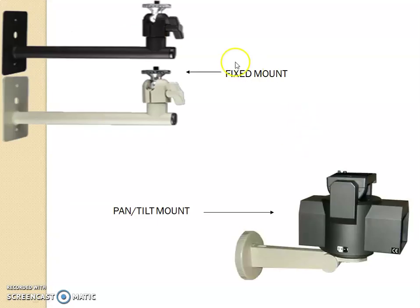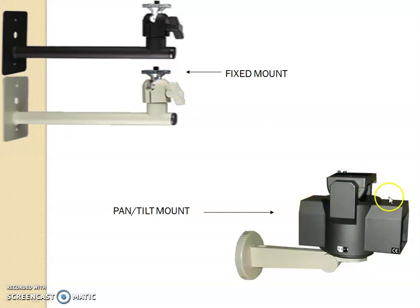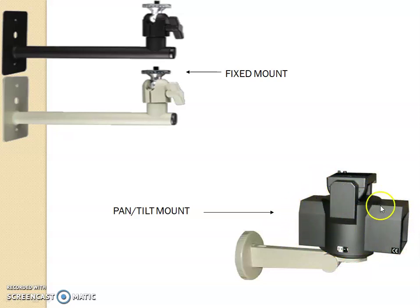Here you see a fixed mount — you fix it like a tripod, attaching the camera to it. Whereas the pan-tilt mount is capable of revolving and also tilting.